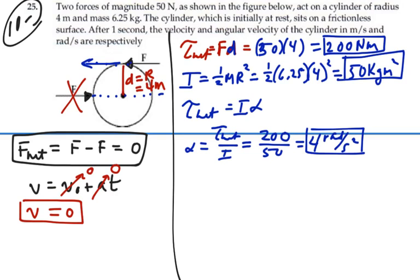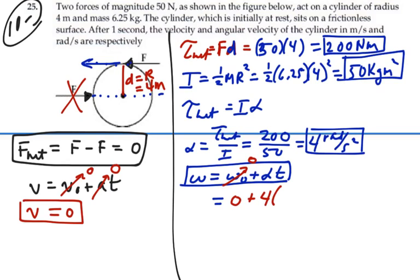Hence, if we want to find our final angular velocity, that's going to be our initial angular velocity plus angular acceleration times time. In this case, we start from rest. So our initial angular velocity is 0. Our angular acceleration is 4. Our time is 1 second. So we're going to end up with the final angular velocity, 4 radians per second. So our final angular velocity is 4 radians per second. Our final velocity is 0 for this object.